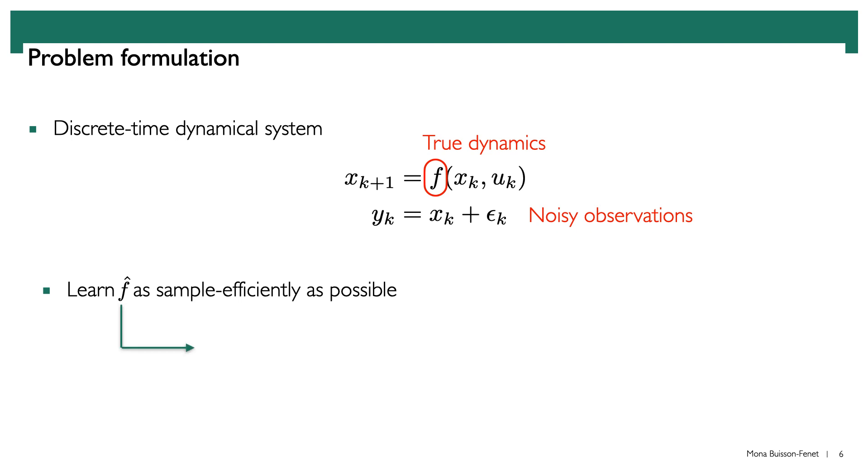In order to do that, a whole line of thought is to use this estimate of the uncertainty of the current Gaussian process model in order to drive the system to regions of the state space that are very uncertain and therefore highly informative.